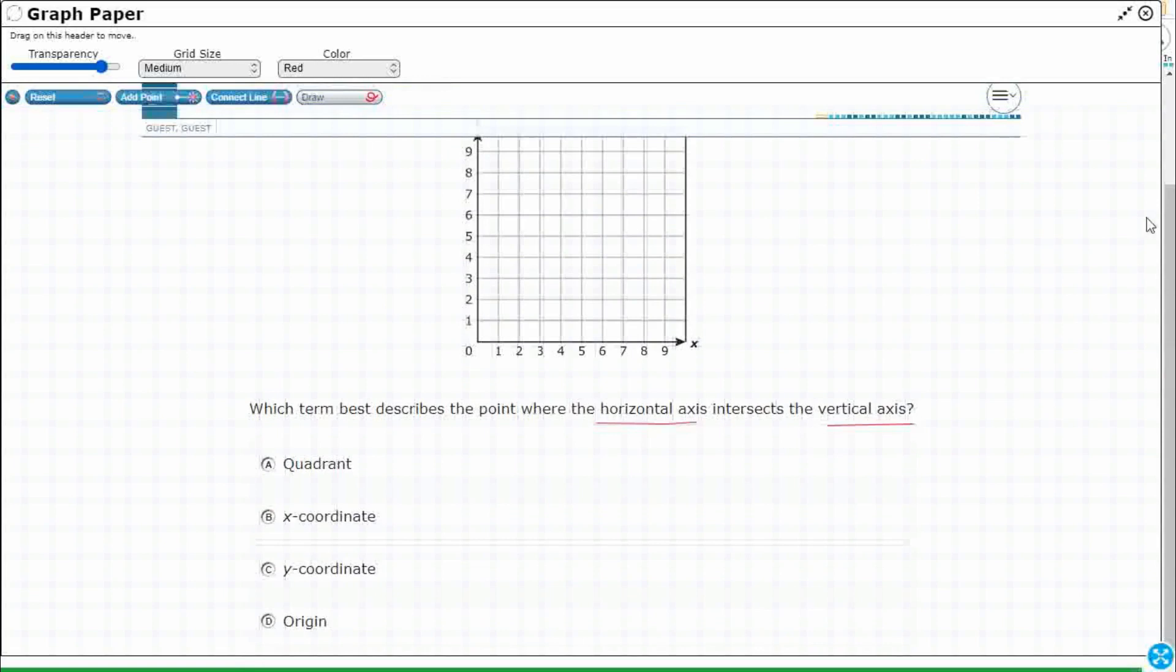So let's make sure that we've got this labeled here. So the horizontal axis, and I will do this in blue here, is this right here. It is also called the x-axis. So the x-axis is horizontal, it will go side to side.